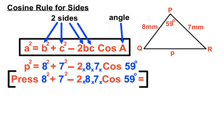When we put them all into our calculator, we can press it all in at once. Eight squared plus seven squared minus two lots of eight, lots of seven, lots of cos, 59 degrees, and press a big equals at the end.